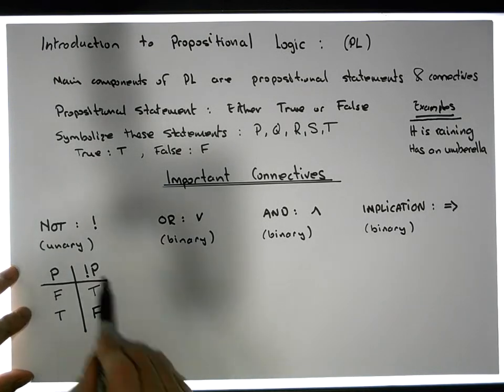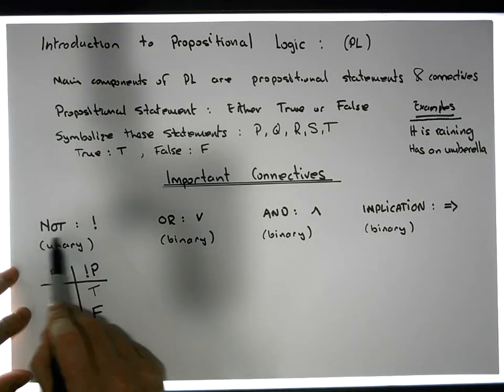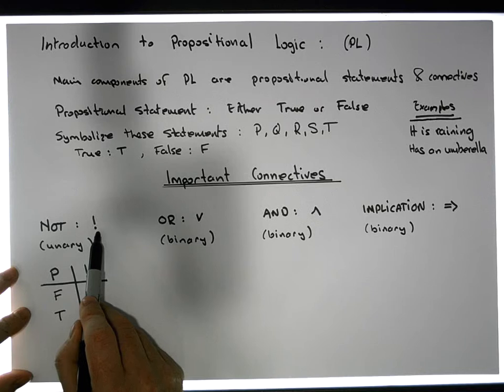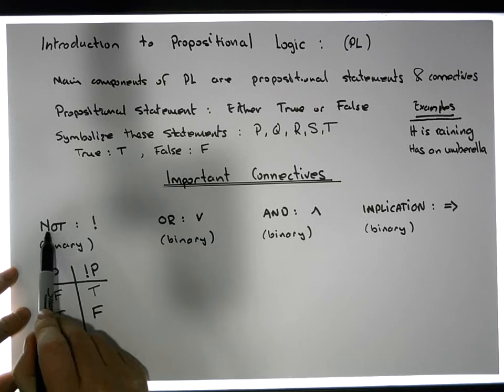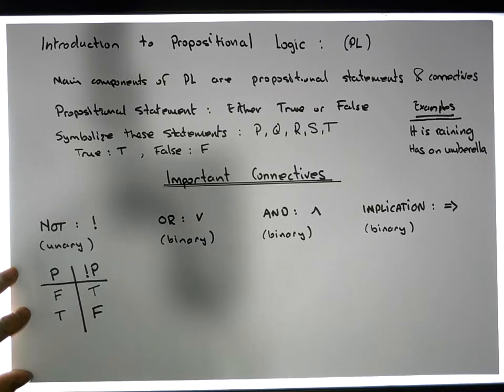This is the way that this particular operator, this exclamation mark, that's a symbol for it, but this particular concept as a negation or a NOT, this is the way it works. The output of a NOT on a proposition is dependent on the input.